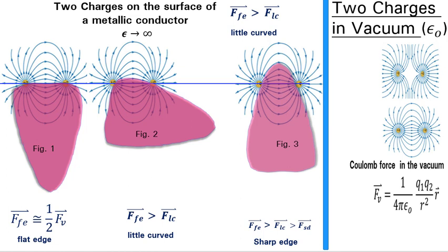If the surface is flat, as we see in figure 1, the conductor shields almost half the electric field lines, which means that the force between the two charges is approximately equal to half its value in a vacuum.